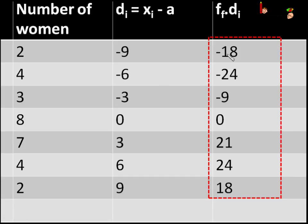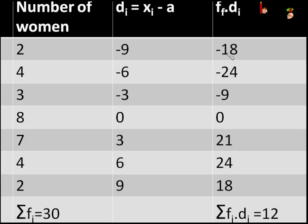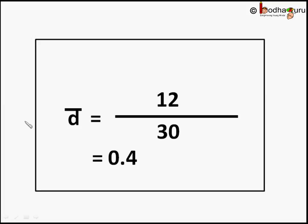Now we find the sum of all fi·di — that is, the sum of the entire column — and that comes to be 12. We calculate the sum of frequencies: 2 + 4 + 3 + 8 + 7 + 4 + 2 = 30. So the mean of deviations, d̄ = 12 / 30 = 0.4.